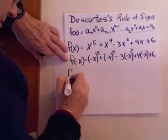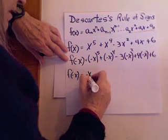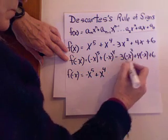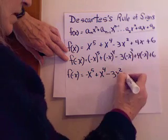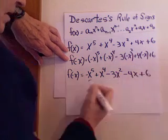Alright, we figure it out. So f(-x) equals -x^5 plus x^4. That becomes positive. So -3x^2. That one's negative. -x. Plus six.